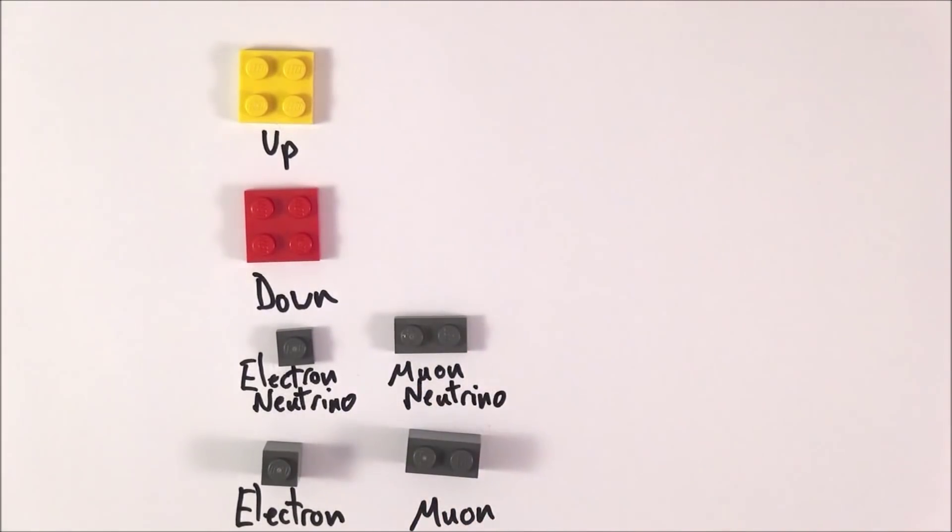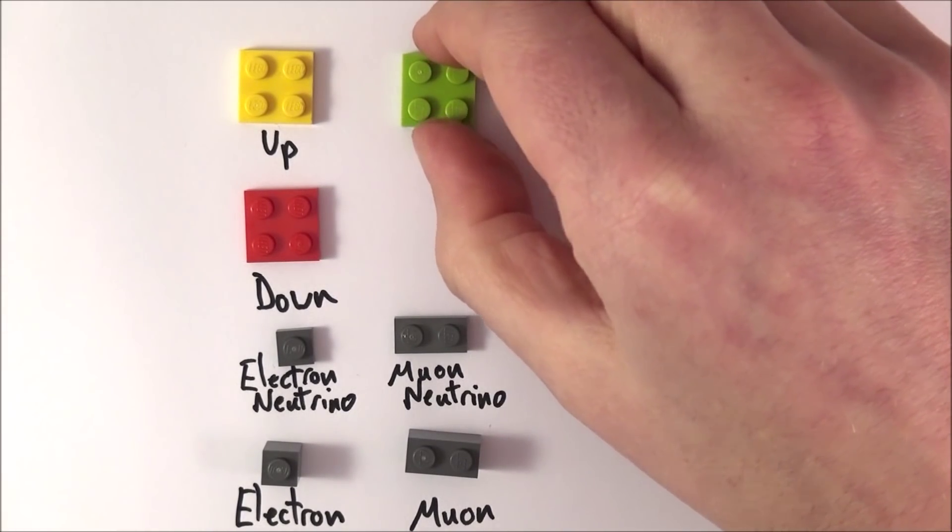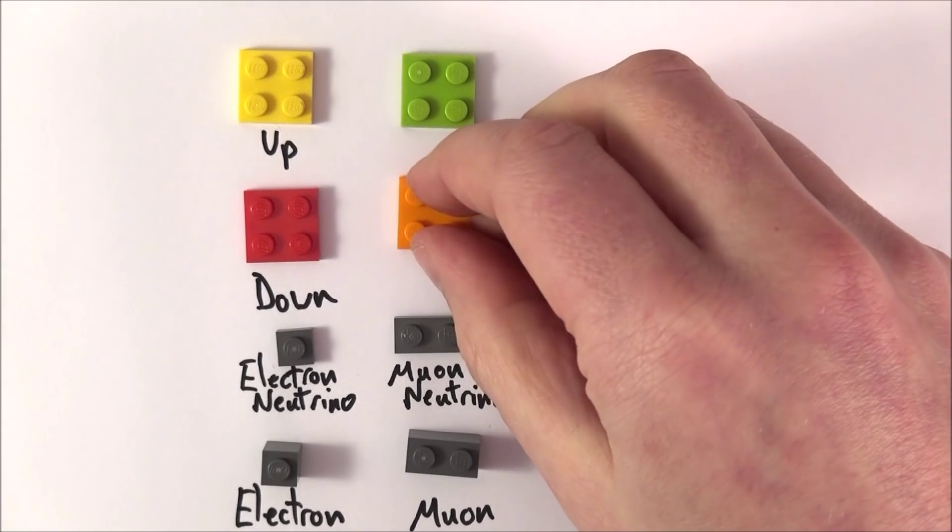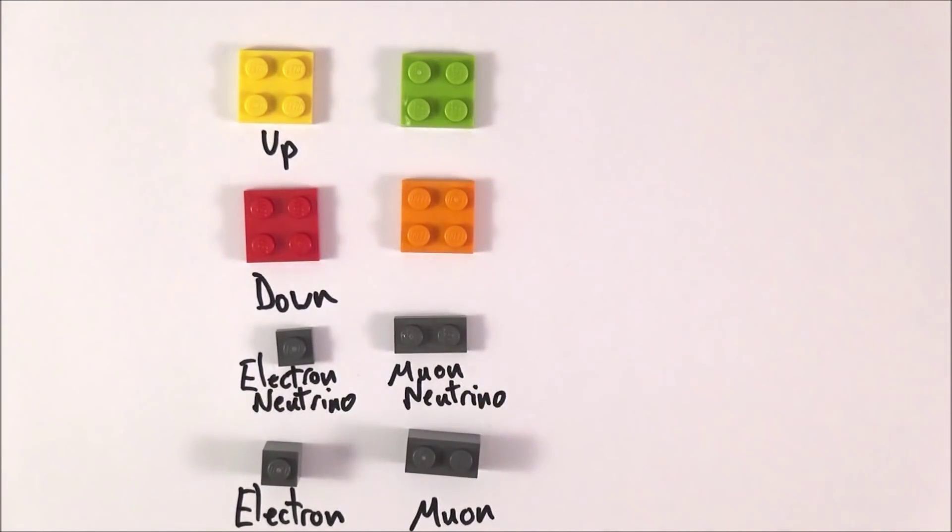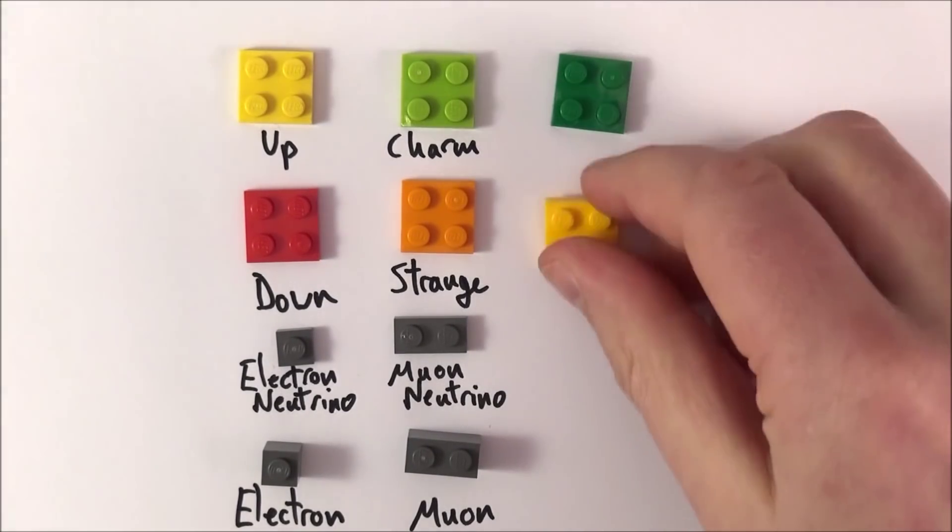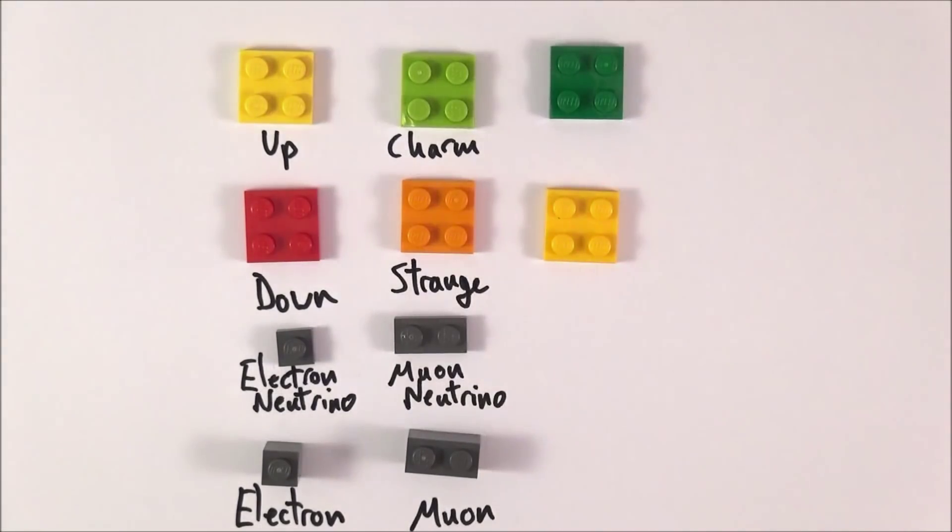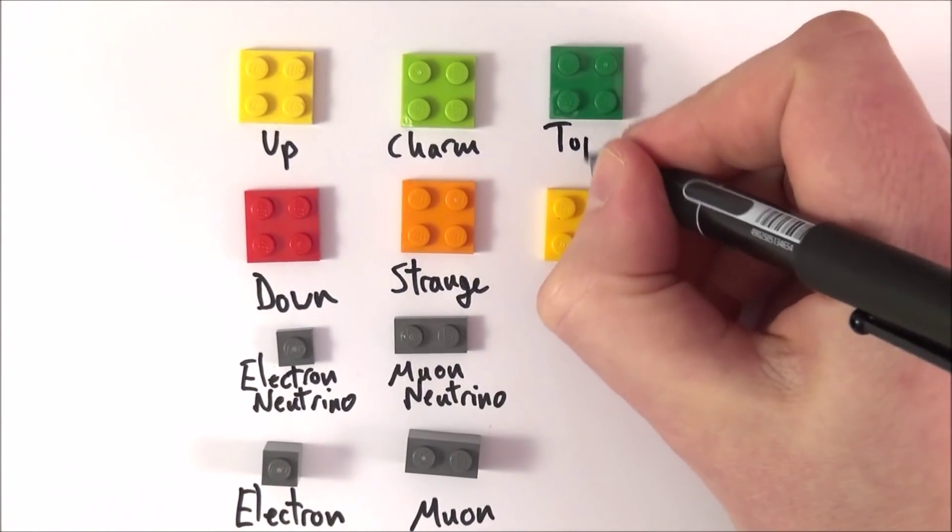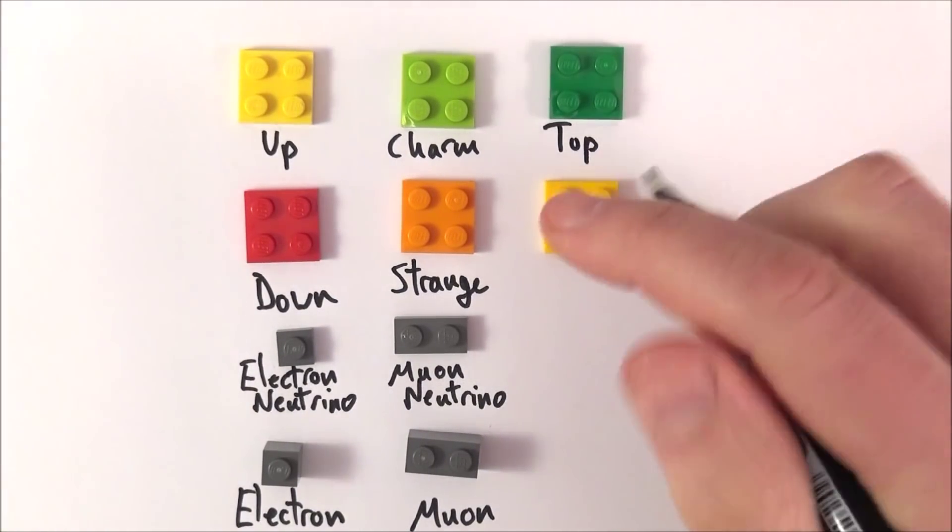As they discovered more and more particles, we had some particles which they called charm, and some particles which had a very strange property, which we call strange quarks. As they looked more and more, they found some more quarks. Here we have a quark at the top which I'm going to call the top quark, and there's one just underneath it which I'm going to call the bottom.